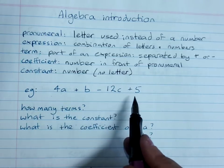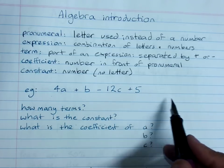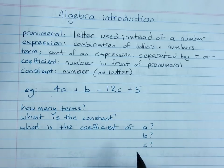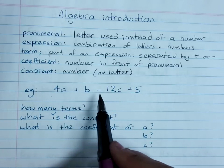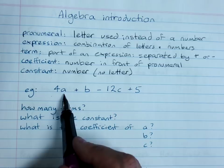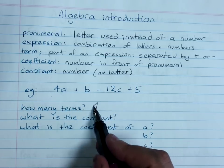So this is an example of an algebraic expression. It doesn't have an equal sign on another side, so it's not an equation. How many terms has it got? They're separated by the plus and minus signs. So 1, 2, 3, 4. Four terms.